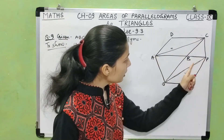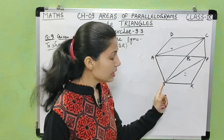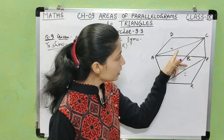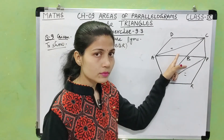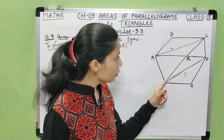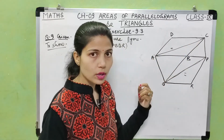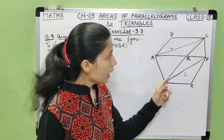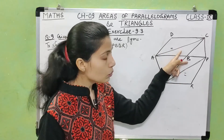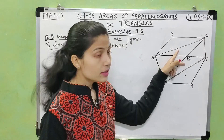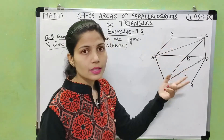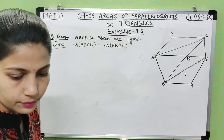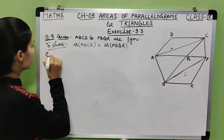Triangles ACQ and APQ are on the same base AQ, and since AQ is parallel to CP, they are between the same parallels. So their areas are equal. From these equal areas, by subtracting the common triangle ABQ, we get the remaining triangle areas are also equal.